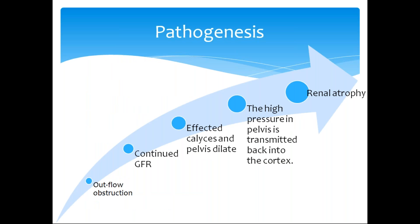Regarding pathogenesis: there will be obstruction to the outflow, which leads to dilation of the calyces and cortical atrophy. Even with outflow obstruction, the kidneys continue their function — filtering the blood. So the filtered GFR will be circulated back and absorbed by the lymphatics, and that leads to pressure accumulation.